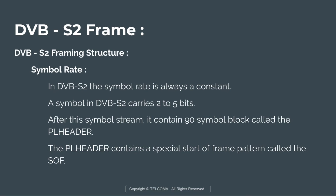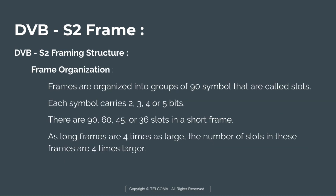In DVB-S2, the symbol rate is always constant, and a symbol carries 2 to 5 bits. The receiver has to track the carrier frequency and locate and maintain symbol alignment. The symbol stream contains a 90-symbol block called the PL header, and the PL header contains a special start-of-frame pattern called the SOF. The SOF in the PL header provides frame alignment, and continuous back-to-back frames are always transmitted. If there is nothing to send, a dummy frame is sent instead.